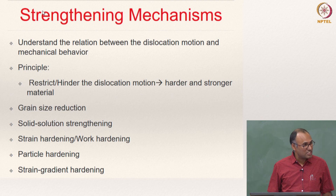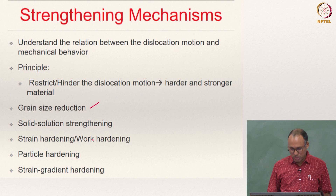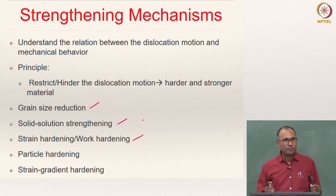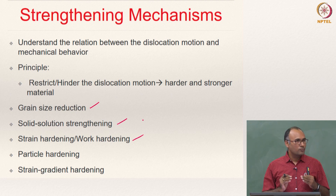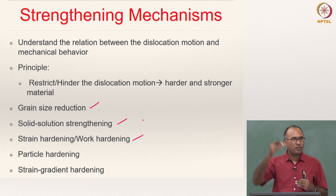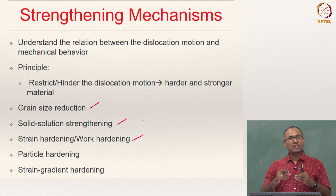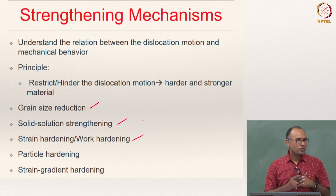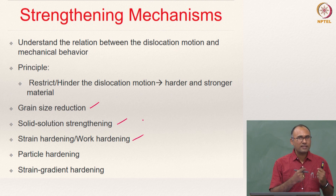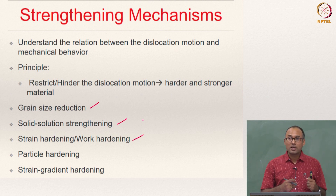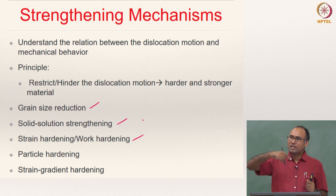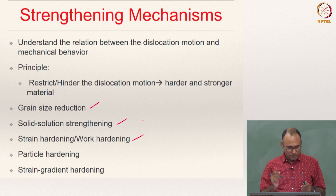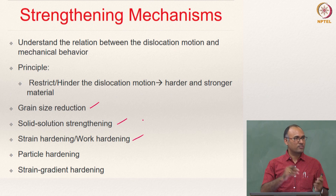We have discussed different strengthening mechanisms: grain boundary strengthening or grain size reduction, solid solution strengthening, and work hardening. We have discussed how they are responsible for increasing the strength of the material and also that when you increase the strength of the material, you are going to lose the ductility. If you increase strength, your ductility automatically goes down, making your material more and more brittle. That is an important consequence of strengthening.